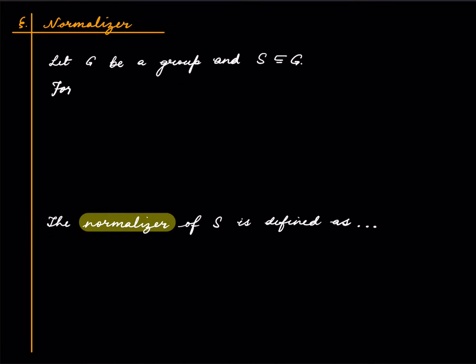So for g in capital G we write gSg inverse to mean the set given by this set builder form. So just pick an element in capital S and form this. This kind of thing is called a conjugate. Form this conjugate of s and collect all such things.